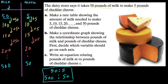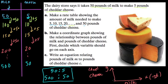Next, they want us to make a coordinate graph showing the relationship between pounds of milk and pounds of cheddar cheese. First decide which variable should go on each axis. I think it probably makes the most sense to have cheese on the y-axis and x be the milk. Because the amount of milk you use is how you make the cheese. x is the independent variable, and y is the dependent variable. We're not using cheese to make milk. We're choosing some type of milk, and that will allow us to make some type of cheese. That's a nice way of setting up our axes.